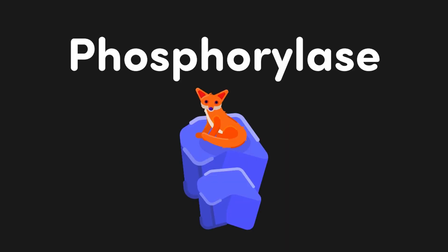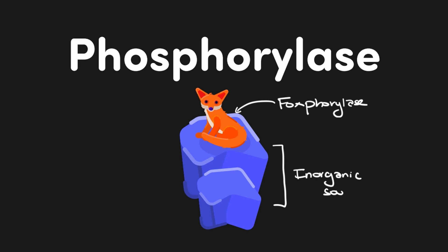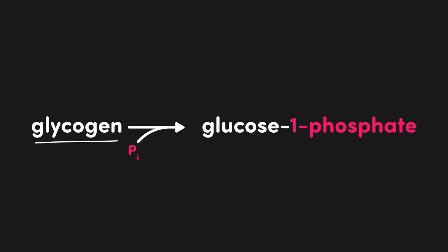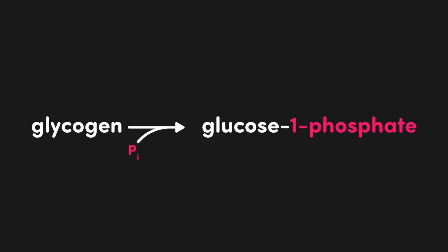Now let's move on to the phosphorylase. I keep the difference between kinase and phosphorylase straight by thinking about a fox on a rock. The only difference between the two enzymes is their source of phosphate — it's organic in the case of kinase, that's ATP, and in the case of a phosphorylase, it's inorganic. A rock is about as inorganic as you can get. Looking at glycogen phosphorylase as an example: glycogen is the reactant, and it gets a phosphate added. Glycogen goes to glucose 1-phosphate with the addition of Pi, which denotes inorganic phosphate.